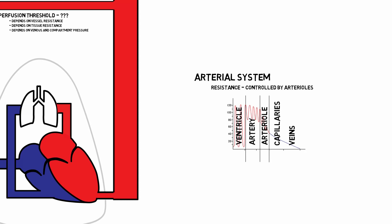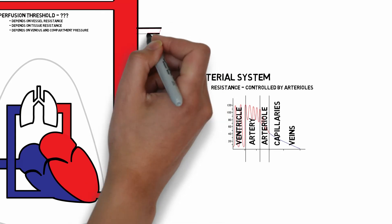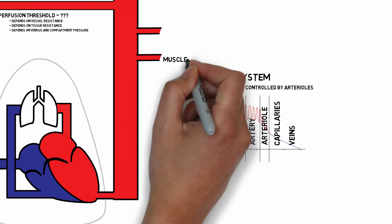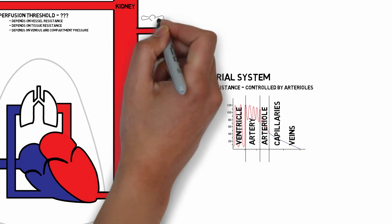Let's use our schema to understand this. Every organ's capillary bed has its own critical perfusion threshold. Muscle and skin are actually among the lowest, whereas organs like the kidney and the liver, which have two capillary beds — and the kidney in particular, which has two arterioles — are among the highest. When we exercise, we can divert an enormous amount of cardiac output into muscles. Otherwise, muscles actually receive very minimal cardiac output.